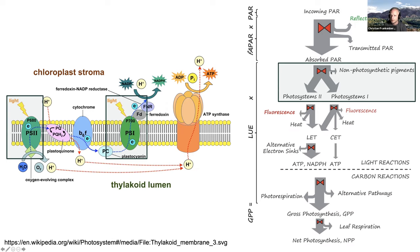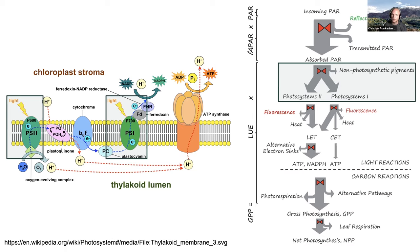In the next step, absorbed light goes into the photosynthetic machinery through both photosystem 2 (PS2) and photosystem 1 (PS1), in what's called the Z-scheme of the light reactions. In PS2, the oxygen-evolving complex splits water, generating H+ and O2 as a byproduct. H+ gradients drive ATP synthase, converting ADP back to ATP — an energy currency for the carbon reactions.